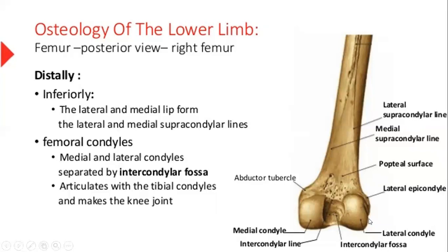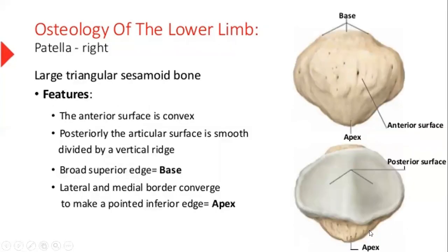These condyles actually help in the formation of the knee joint. Now let's talk about patella. Patella is a free triangular large sesamoid bone that is present on the anterior surface of the knee. The anterior surface is convex. Posteriorly it is divided by a vertical ridge. Superiorly we have the base, and inferiorly we have the apex.